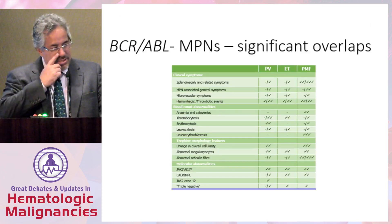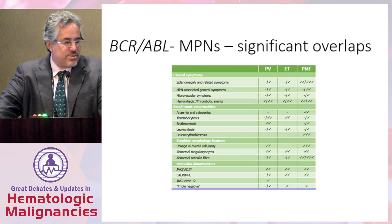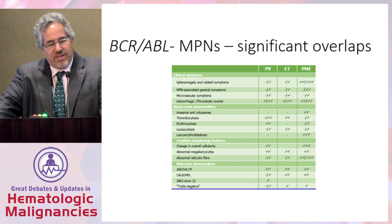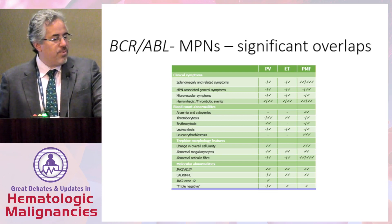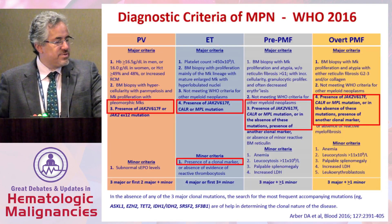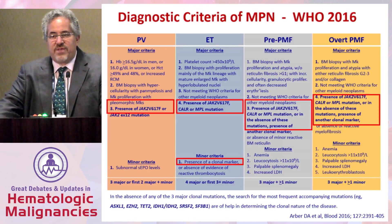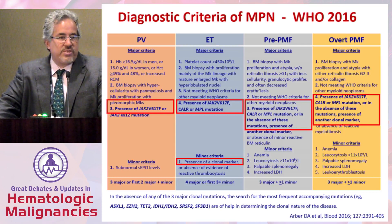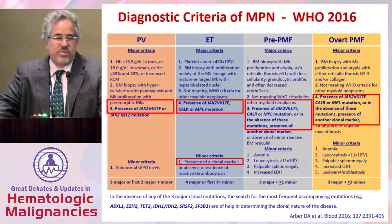As we think about MPNs, these are clearly a series of disorders — PV, ET, and myelofibrosis — that have a whole range of different ways they can overlap phenotypically, from blood counts, spleen size, and symptom burden. Triple negative specifically relates to the three key driver mutations: JAK2, CALR, and MPL. It is those individuals that lack one of those three key driver mutations.